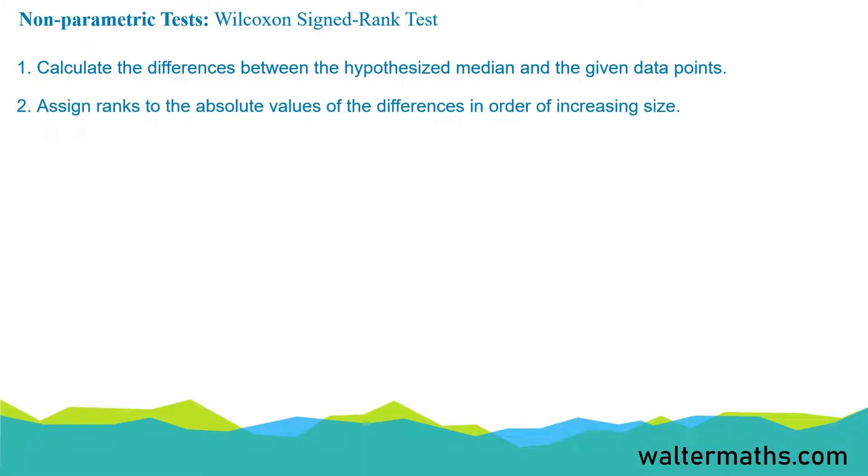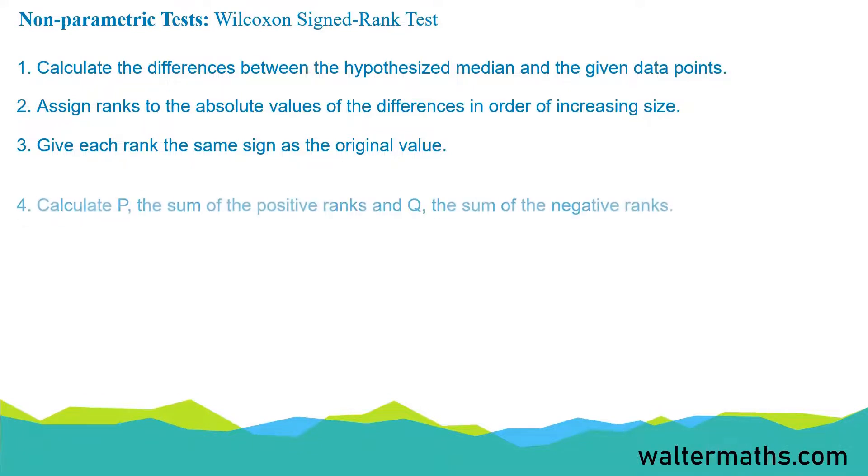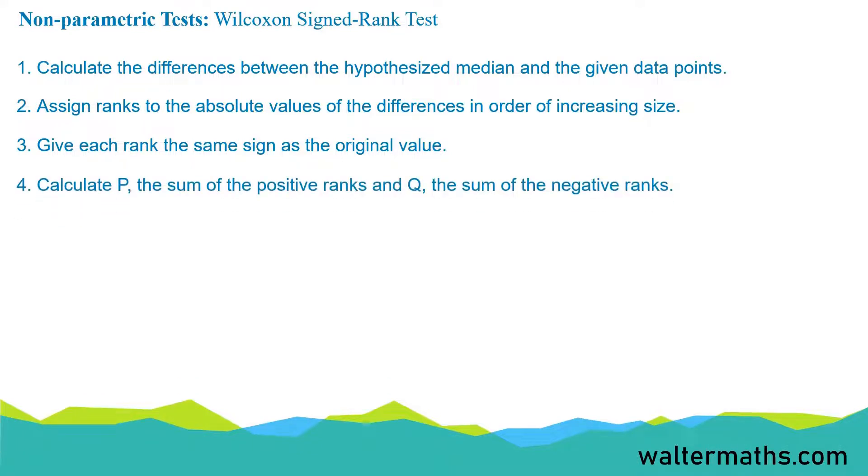Next, we assign ranks to the absolute values of the differences in order of increasing size. Then we're going to give each rank the same sign as the original value. Next, we calculate P, which is the sum of the positive ranks, and Q, the sum of negative ranks. After that, we find the test statistic.